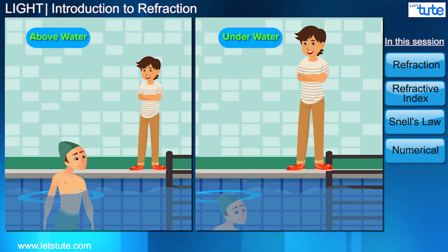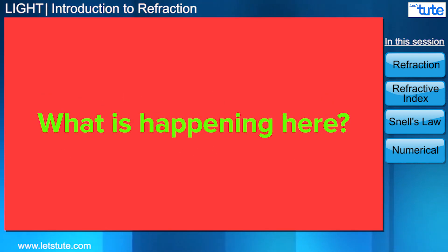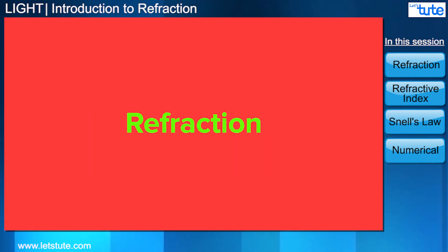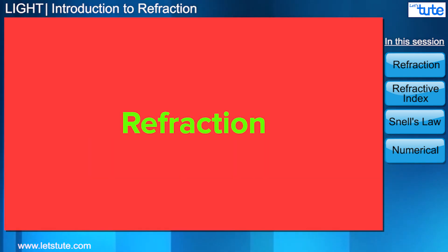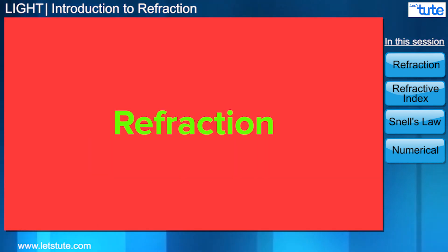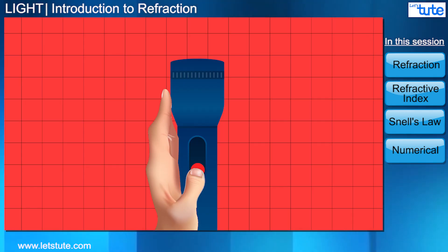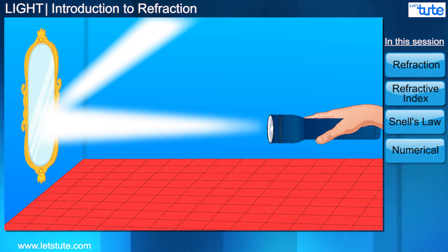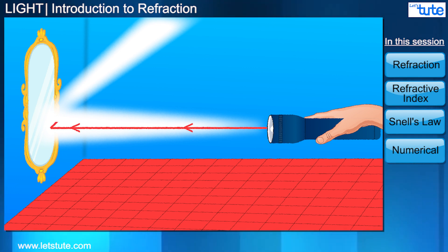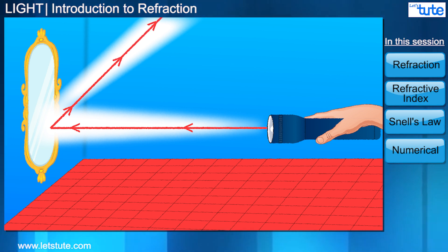Well, the reason is refraction. Stick around till the end of the video to understand how this works. But first we need to talk about light and light rays. When you shine a torch, you can see that the light rays always travel in straight lines. Even when they get reflected, they travel in straight lines after reflection.